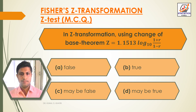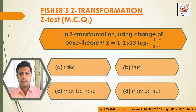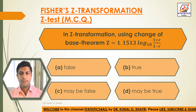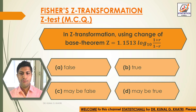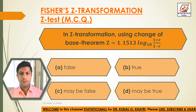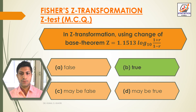Next question. In Z-Transformation, rho transforms to Z is equal to half log of (1 plus r) divided by (1 minus r), to the base E. Option A: False. Option B: True. Option C: May be false. Option D: May be true. Here we have the answer: Option B, True. In Z-Transformation, using change of base theorem, Z is equal to half log of (1 plus r) divided by (1 minus r), to the base E.